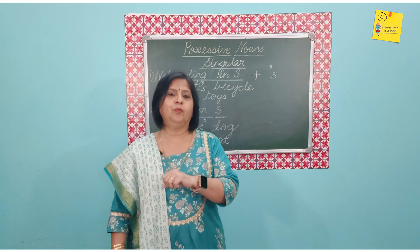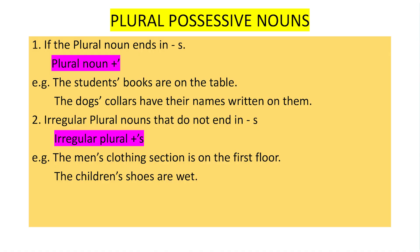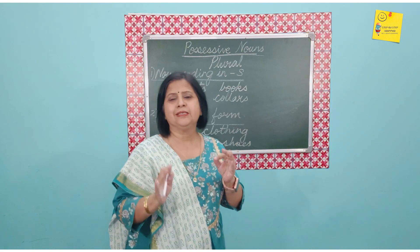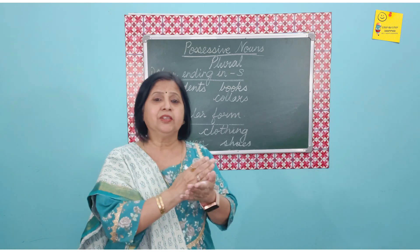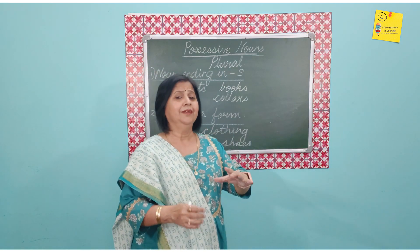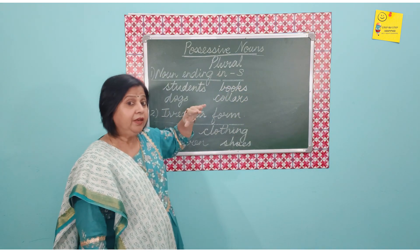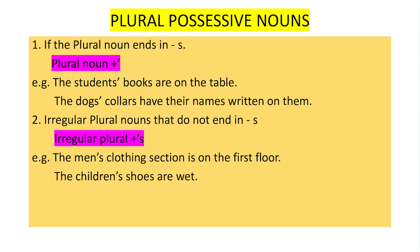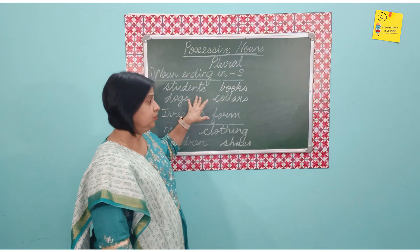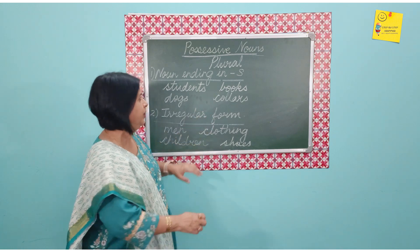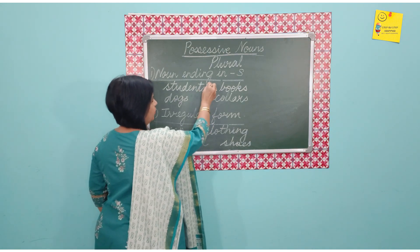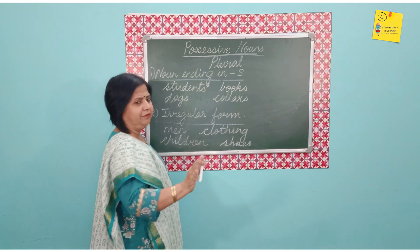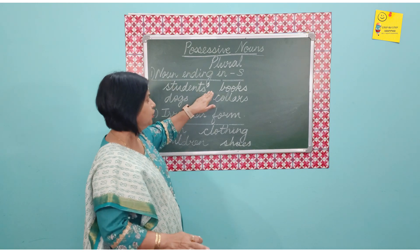Now let us look at the plural form of possessive nouns, which also has two categories. The first is the basic plural where we just add an S to make a singular noun plural. When the noun already ends in S — like students — do not add an extra S after it. Just put an apostrophe. So the books of the students is written students' books. Similarly, the dogs' collars — plural, apostrophe only, no extra S.